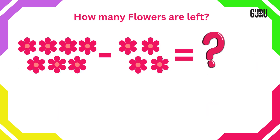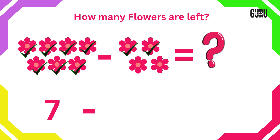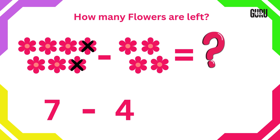How many flowers are left? Here we have to do subtraction. Let's count. 1, 2, 3, 4, 5, 6, 7 and 1, 2, 3, 4. So 4 flowers need to be crossed out from 7. Now count how many flowers are left.